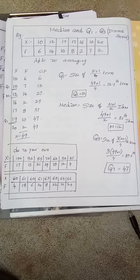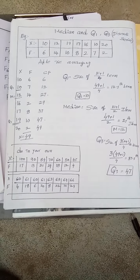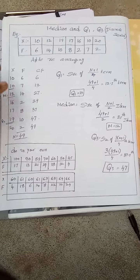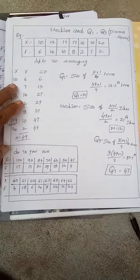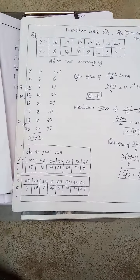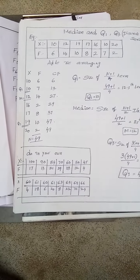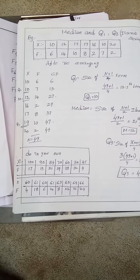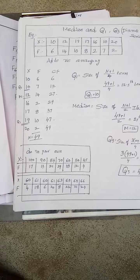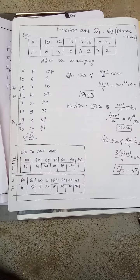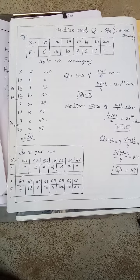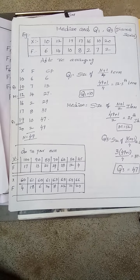When X and F are given, my dear students, you have to rearrange the data on the basis of X. See, after rearranging I got like this: 10, 6; 10, 7; 12, 14; 16, 2; 17, 8; 19, 10; 20, 22. After that I took CF, cumulative frequency, adding of frequency numbers: 6, 6 plus 7 is 13, 13 plus 14 is 27, like this.